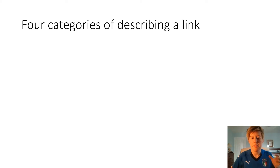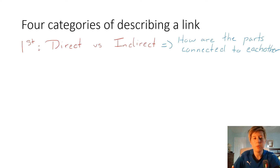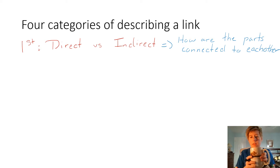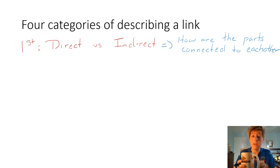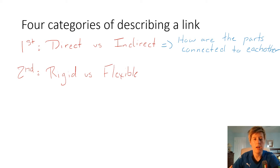Our first category is something called direct versus indirect. Direct versus indirect is really concerned with how the parts are connected to each other. For example, looking at my coffee mug, I would see a link between the handle and the mug — how they are connected to each other — and I would be looking at whether it's a direct or an indirect connection.